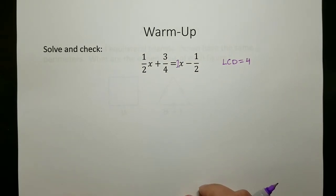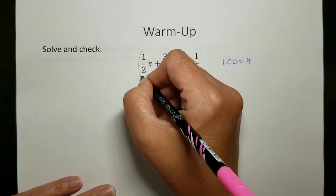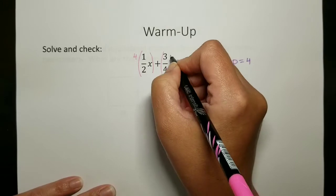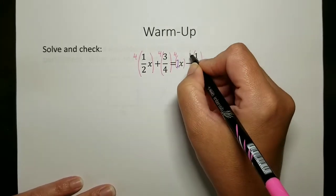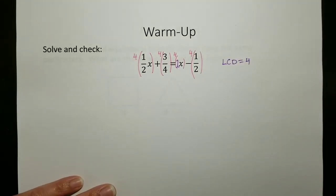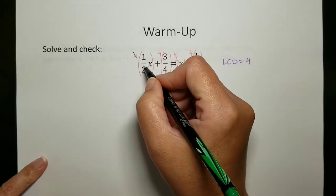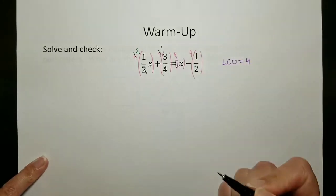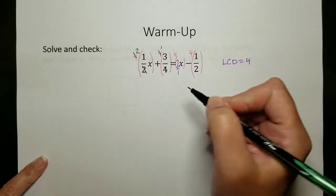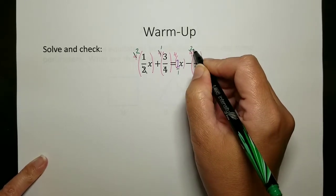So I'm going to go through and multiply each term here by the lowest common denominator. I'm going to take that lowest common denominator of four and multiply each piece of my equation times four, and then I can reduce and that will eliminate all of the fractions. When I'm doing my reducing, four over two reduces to two, four over four reduces to one, and four over two reduces to two.